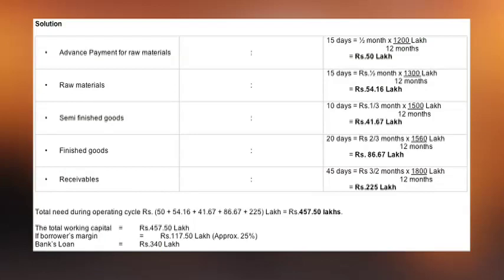At the receivable stage, the cost comes to one thousand eight hundred. We have already worked this out earlier — one thousand eight hundred. After loading the profit and everything, it comes to one thousand eight hundred. Dividing by twelve and taking three by two, that is one point five months holding. So it works out to two hundred twenty-five lakhs.